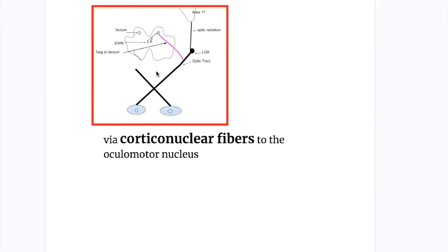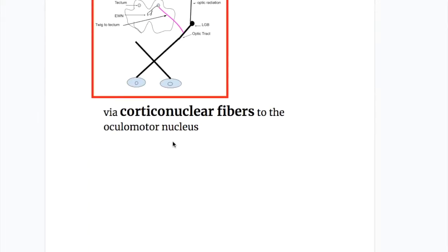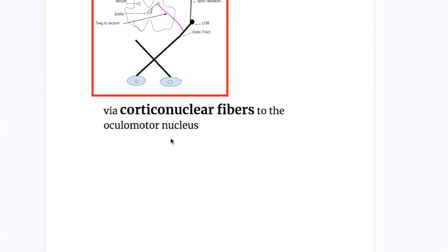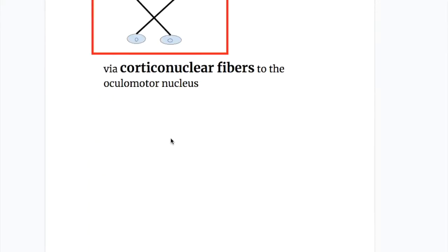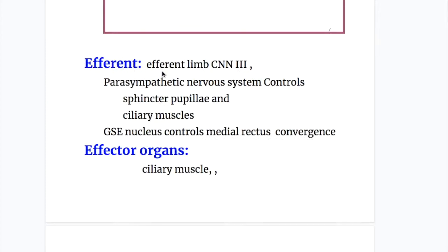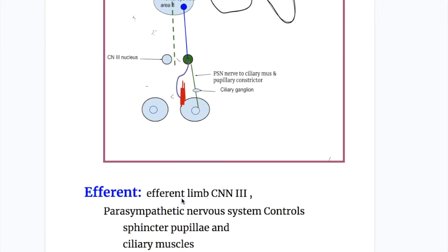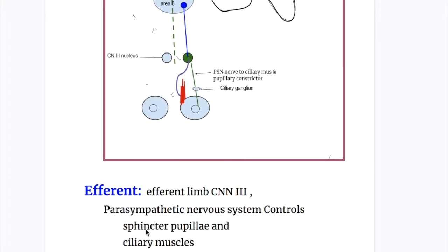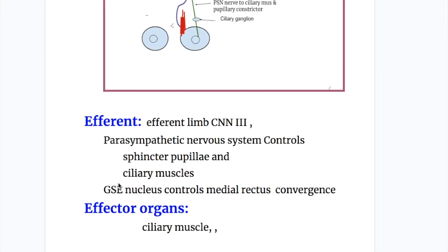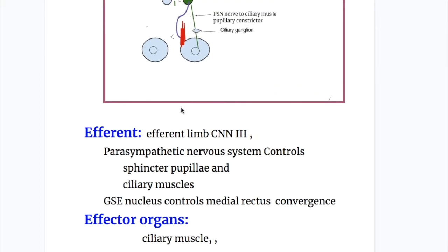The efferent fibers from the oculomotor nucleus include parasympathetic fibers to the sphincter pupillae and ciliary muscle, while the general somatic efferent nucleus controls the medial rectus component of the accommodation reflex.